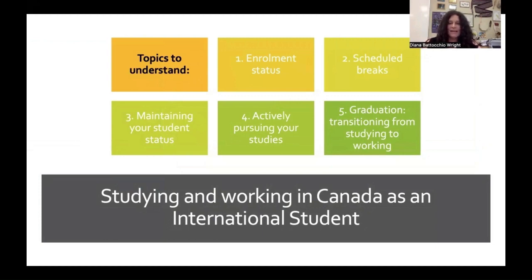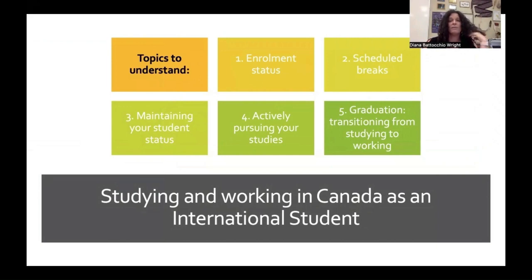Number one: enrollment status. In Canada, your study permit allows you to study full time or part time. If you're an associate degree student allowed to work in Canada, you must maintain at least three associate of arts or university transfer courses minimum during the semester. If you drop down to two courses, you become part-time and are not allowed to work at all. If you are a full-time student — minimum three courses — you're allowed to work up to 20 hours a week while studying, and during semester breaks you're allowed to work full time. If you're a high school or English studies student, you are not allowed to work in Canada.